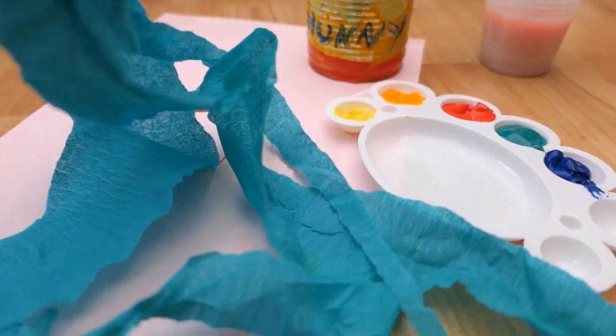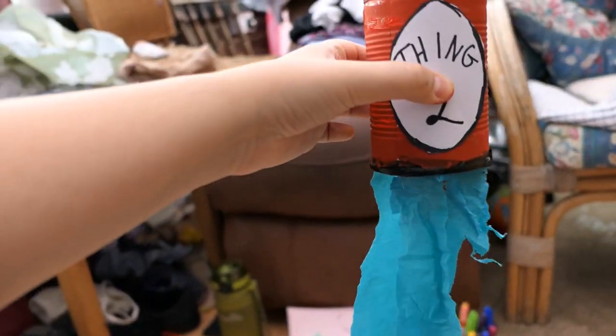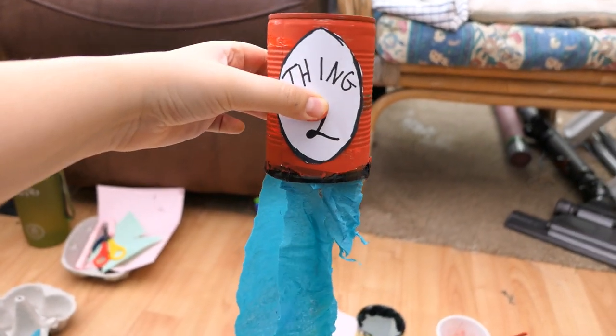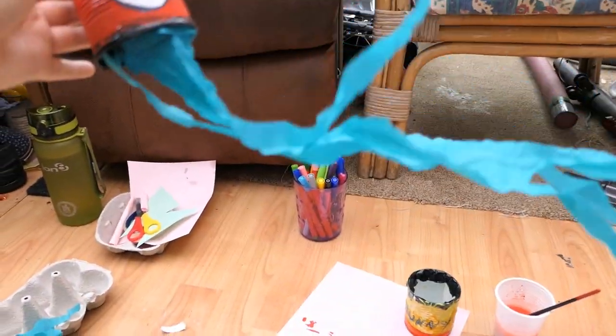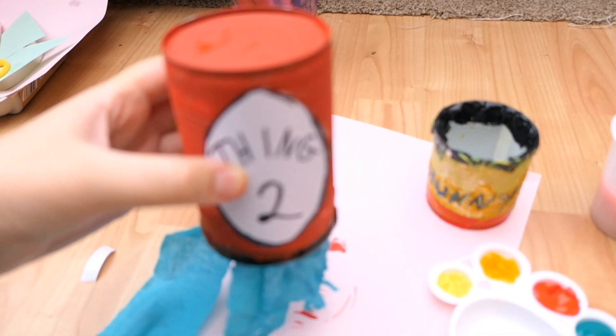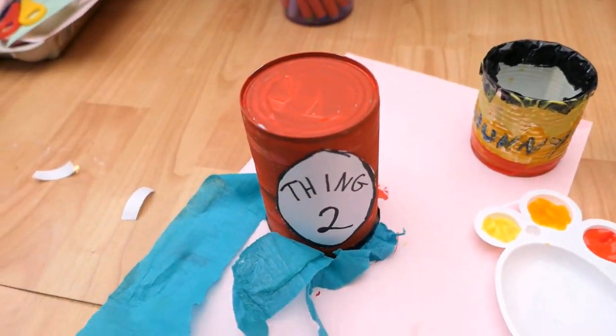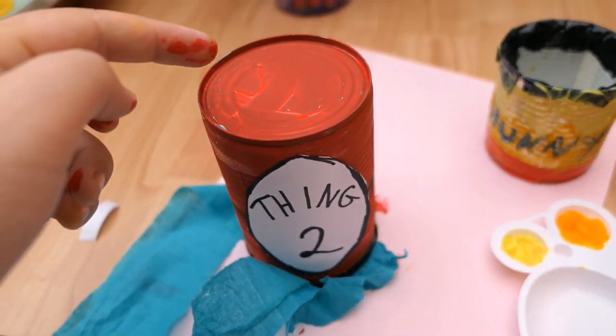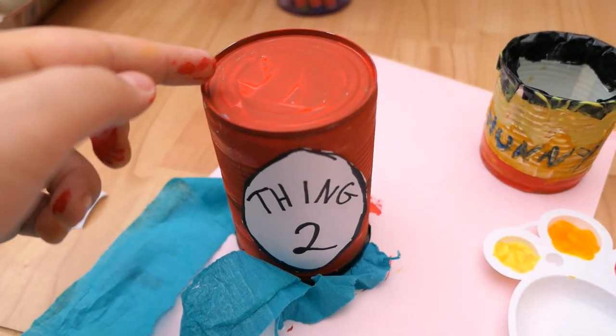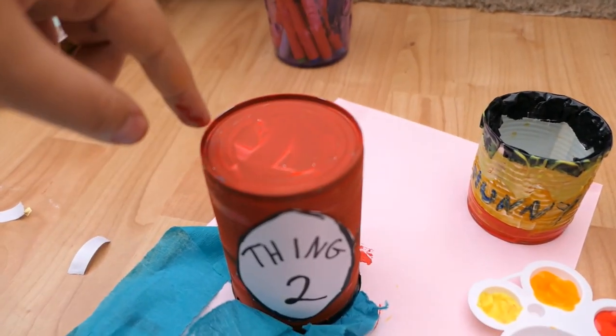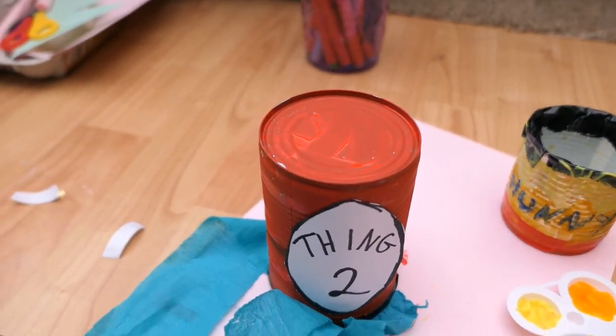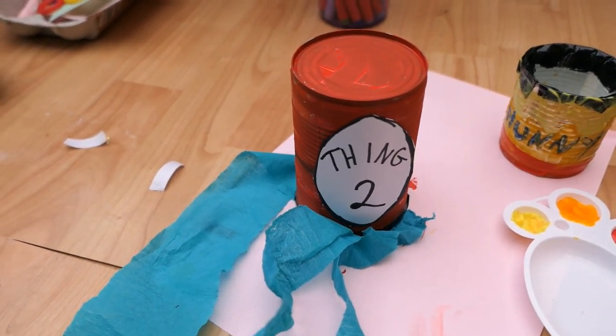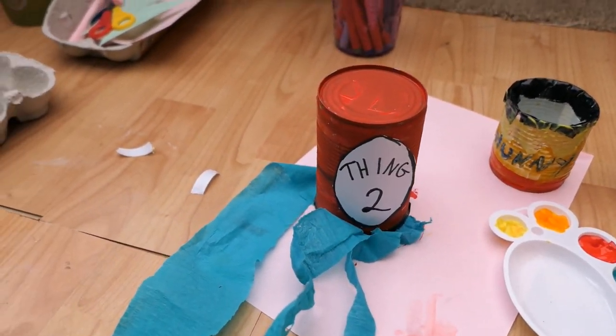There you go. If I hold this up you'll be able to see your Thing 2 can. And it blows in the wind. So on the top you can stick or glue or tape on some string so you can hang it up. So a bit there and a bit there. And then you can hang it on a tree or in your house and watch the ends fly in the wind.